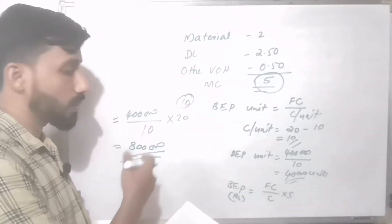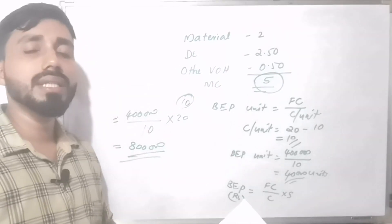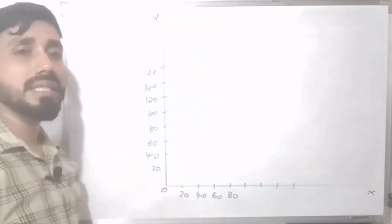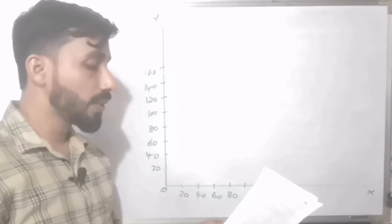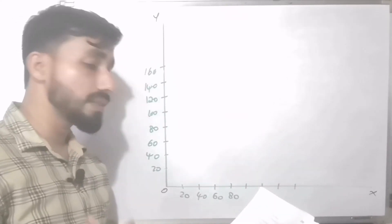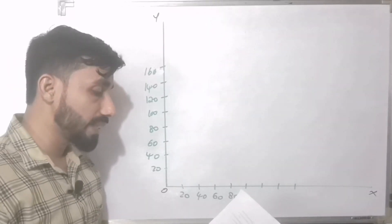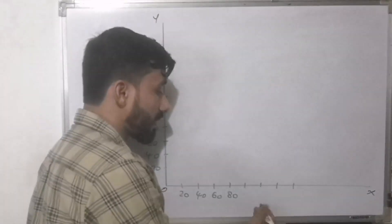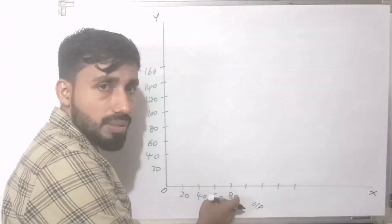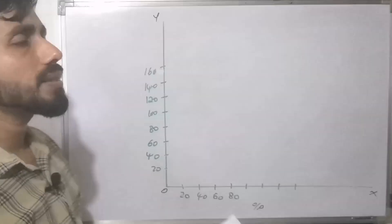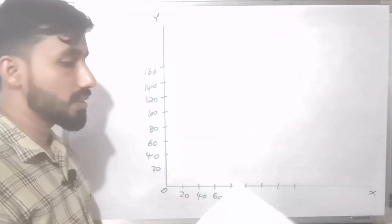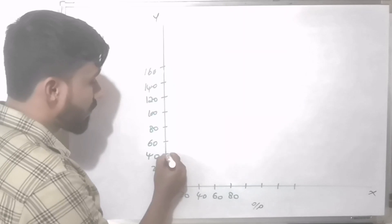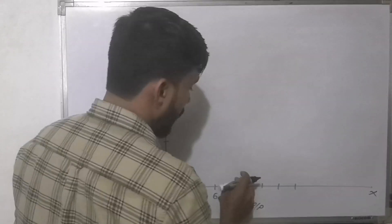Now for the break-even chart. We start by plotting the fixed cost as a horizontal line. Fixed expenses are Rs. 4,00,000. The x-axis represents output up to 80,000 units. We draw a straight line across for the fixed cost.